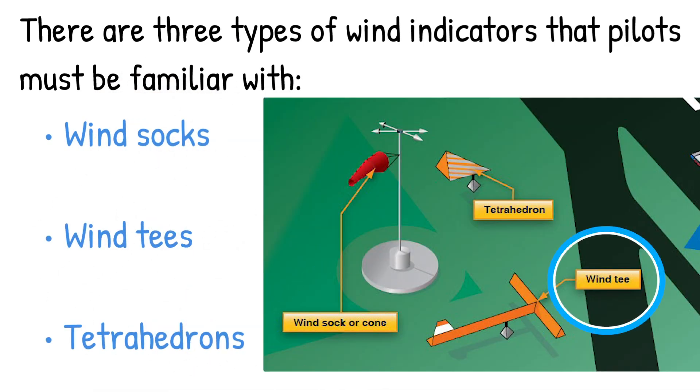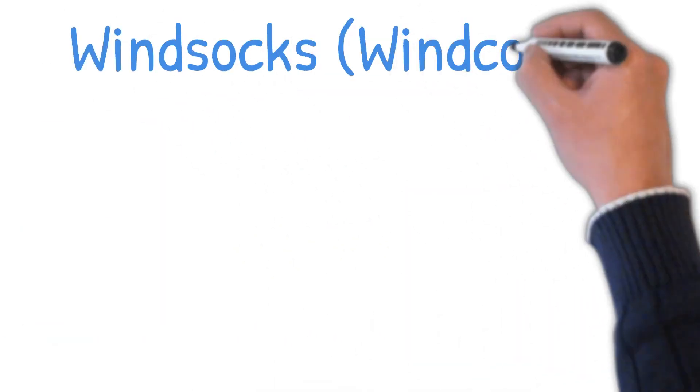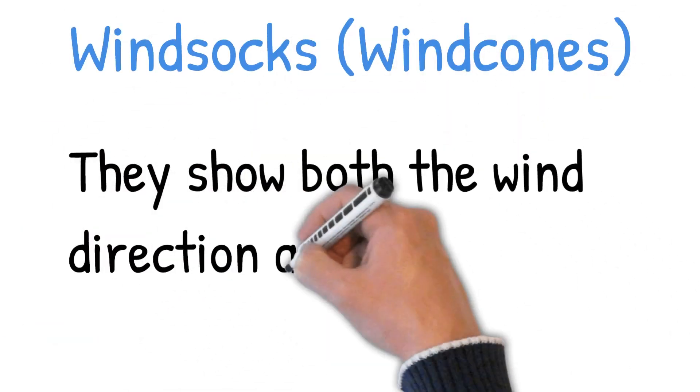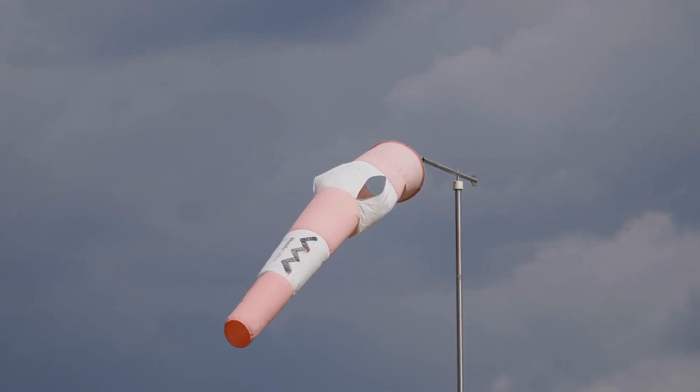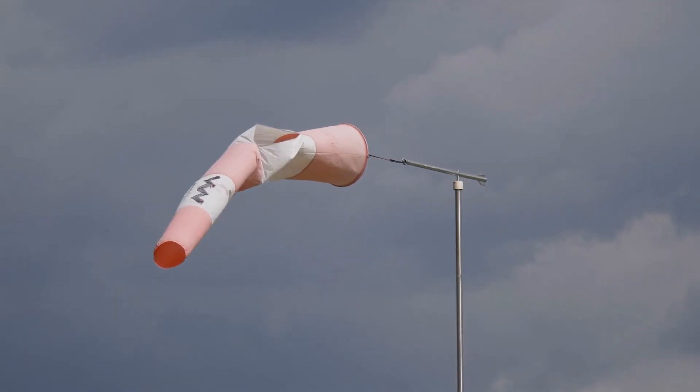Wind socks, wind tees, and tetrahedrons. Wind socks or wind combs show both the wind direction and wind velocity. The narrow part of the wind sock points in the direction the wind is blowing. If the wind sock is straight, this indicates the wind velocity is strong.